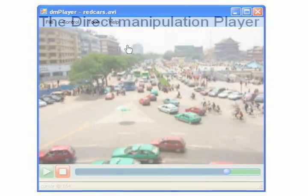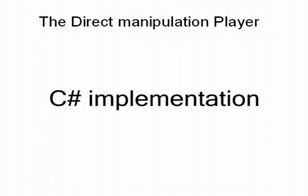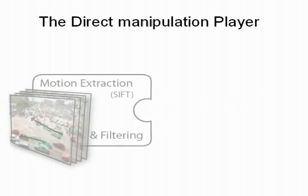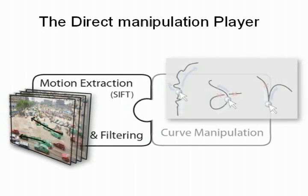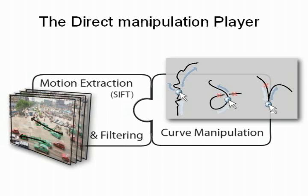We implemented Dimpy using the C-sharp language. Its implementation involved the combination of two main components: a motion extraction and filtering component that populates each video frame with motion curves, and a curve manipulation component that translates a pointer's 2D motions into a location on a motion curve, which in turn corresponds to a particular frame in the video.